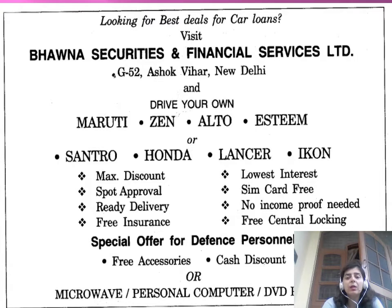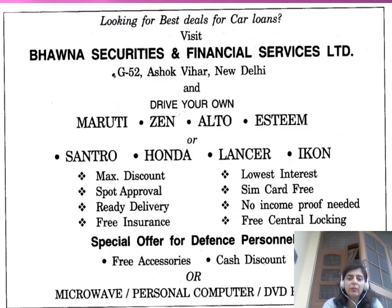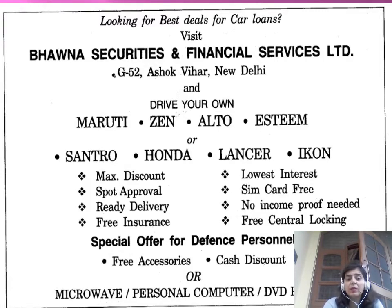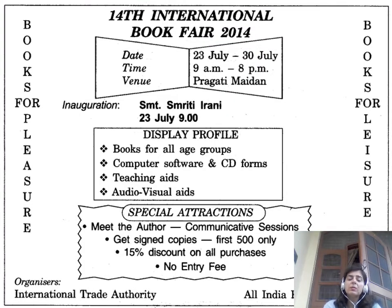This is a display advertisement for a car loan company. 'Looking for best deals for car loans? Visit Bhavana Securities and Financial Services.' Give the address and highlight offers: maximum discounts, instant approval, ready delivery, free insurance, lowest interest, free SIM card, free central locking, free accessories, cash discount. Notice how some text is bolded and different font styles are used — this is how your ad should look, proportionately spaced.